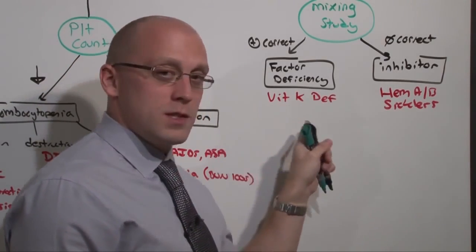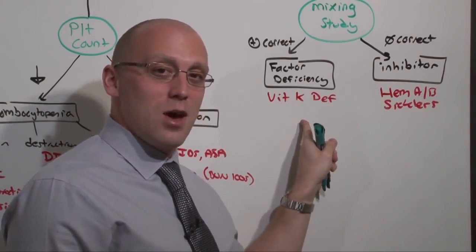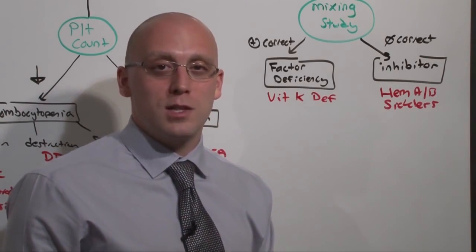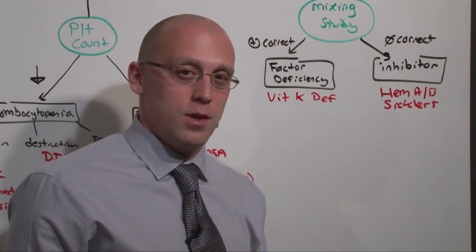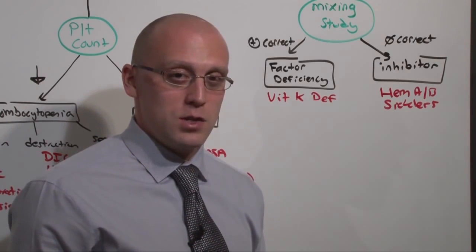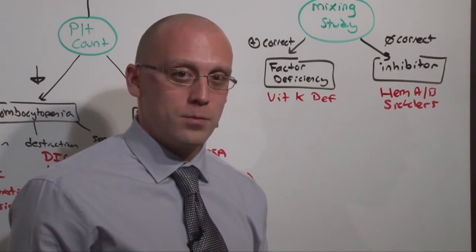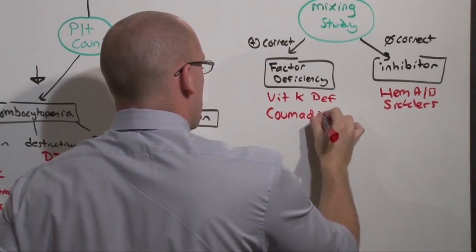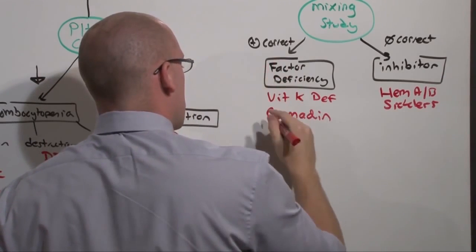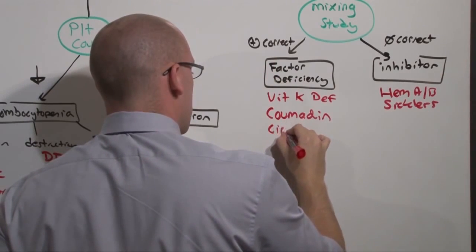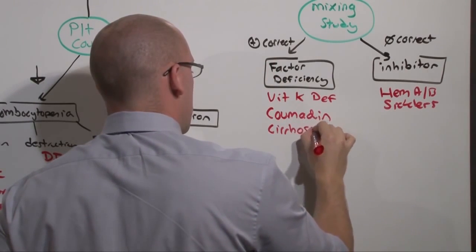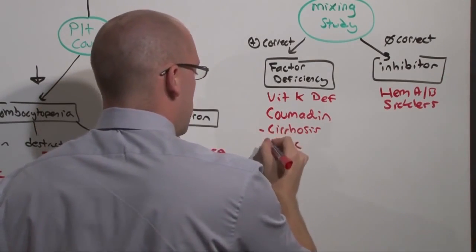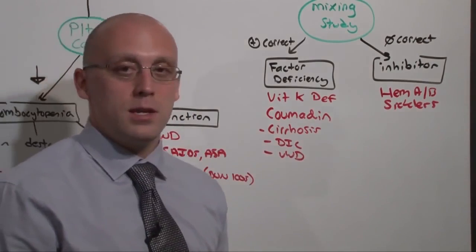This is going to be the person we put on Coumadin and deprive them of their vitamin K. Or the person who eats a tea and toast diet and doesn't get enough vitamin K in their diet. And particularly, the person who's been in the ICU for two weeks who hasn't been fed. Think of vitamin K deficiency if their INR starts to go up. Coumadin use can do this. And what frustrates people is that the factor deficiencies can also be a product of cirrhosis, DIC, and von Willebrand disease.